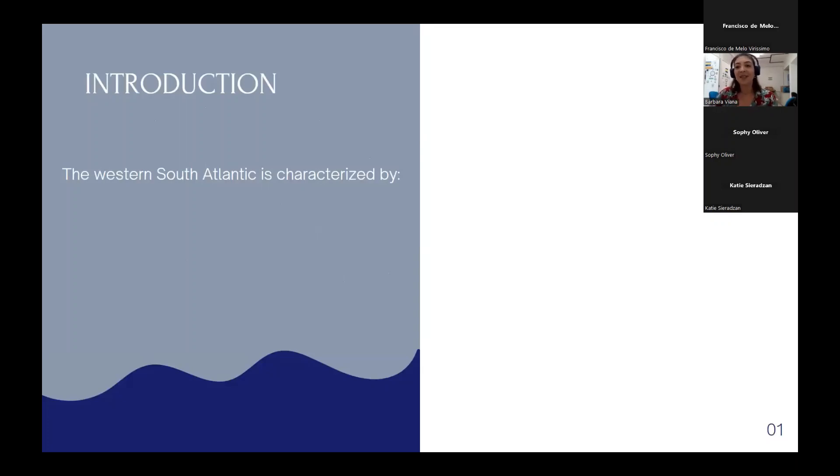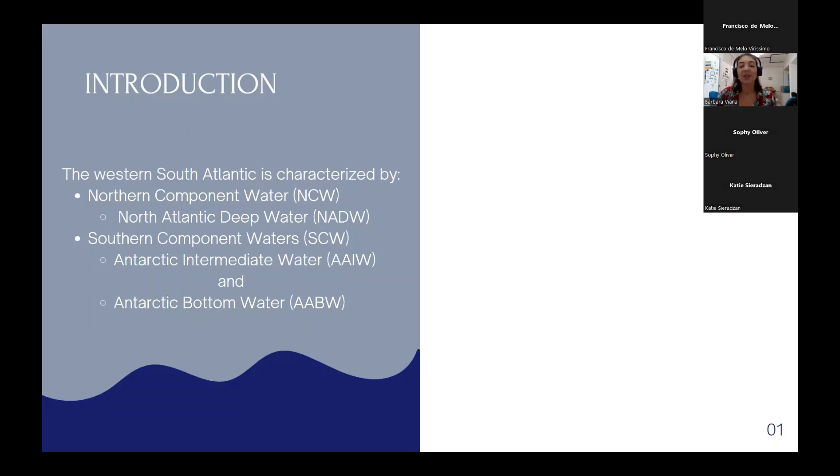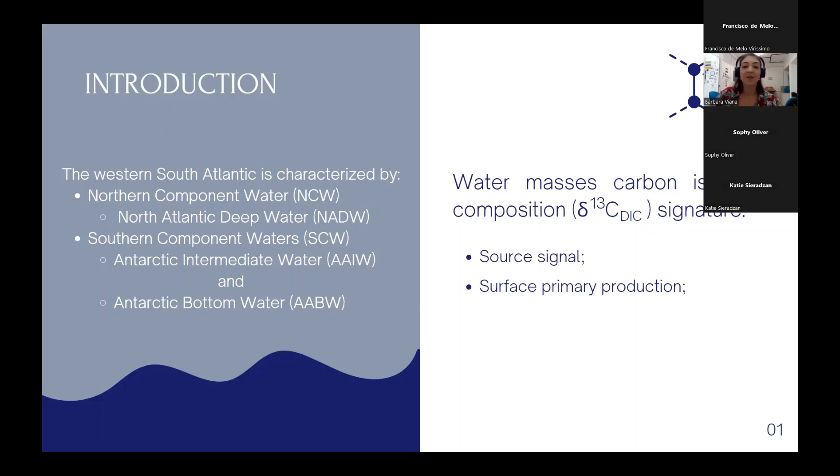Obviously, ocean circulation plays an important role to set the isotopic composition in the water column. It is important to have in mind that the Western South Atlantic is characterized by three water masses. One of them is the Northern component water, which carries the North Atlantic deep water, and the other two are Southern component waters, which are Antarctic intermediate water and Antarctic bottom water. There are other components that can alter the carbon-13 composition in the water column, and this isotopic composition signature depends on source signal, surface primary production, organic matter remineralization, air-sea gas exchange, and the ocean circulation itself.